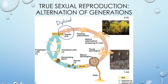That zygote goes through mitosis to become multicellular and create — in this case for a slime mold — a feeding plasmodium. That keeps going through mitosis, growing larger and larger. This is an example of a slime mold. Eventually those slime molds will create a sporangium. The sporangium is kind of like the reproductive organ of the slime mold, and inside the sporangium it goes through meiosis.